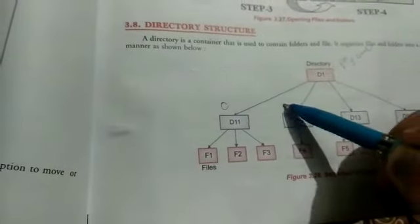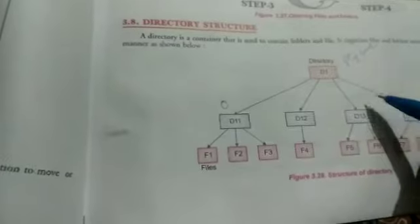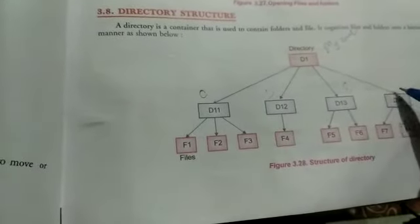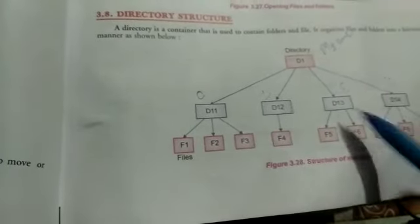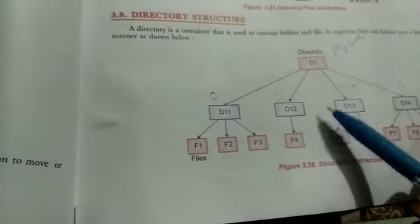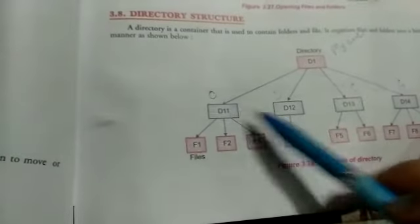And these are the drives in my computer. Directories like C, local disk C and local disk D and E or G, local disk G. In my computer drives are there like this.